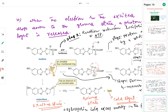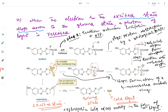When the electron in the excited state drops down to the ground state, a photon of light is released. This is where the light comes from: excited state oxyluciferin returns to the ground state and loses excess energy in the form of a photon. This is the whole chemical reaction involved in light production by fireflies.